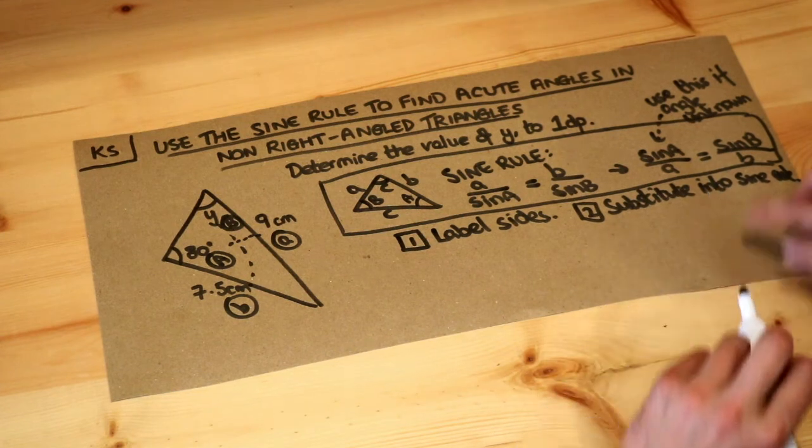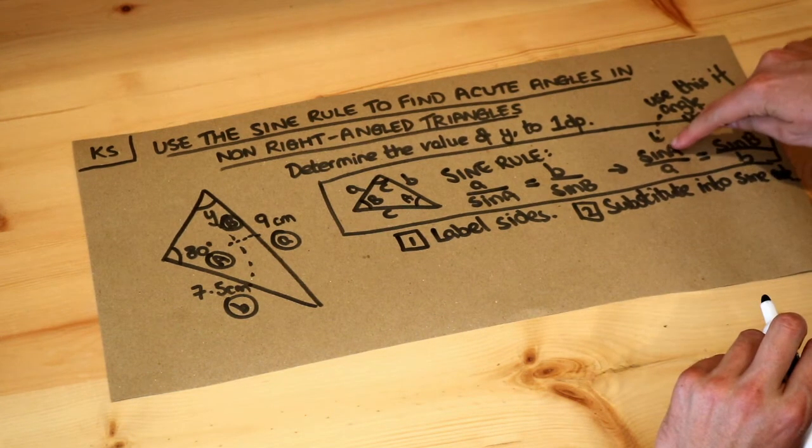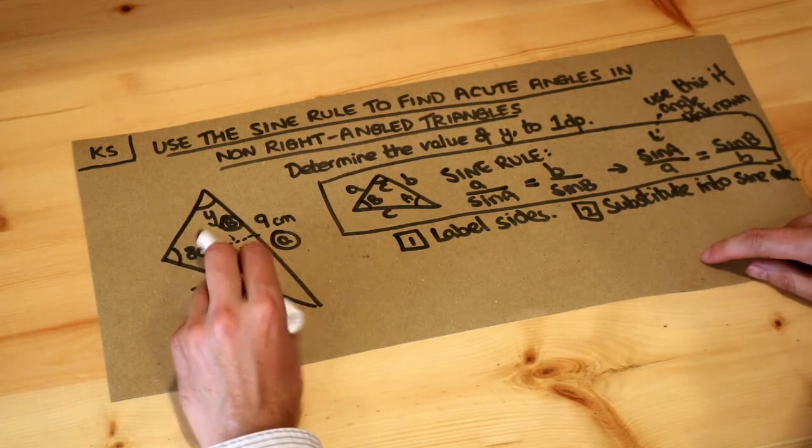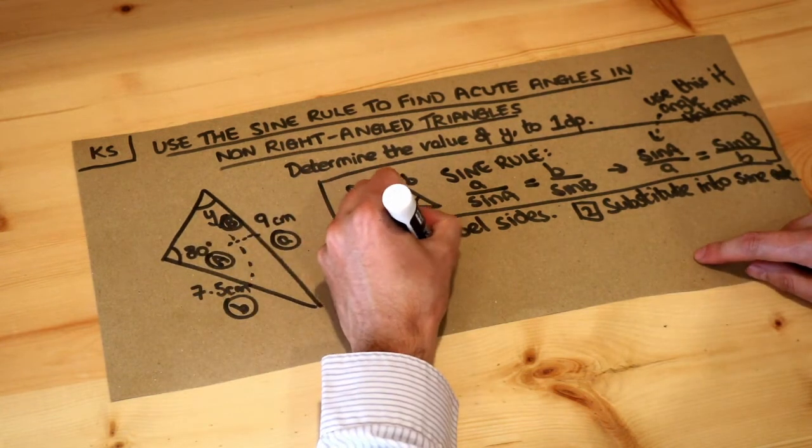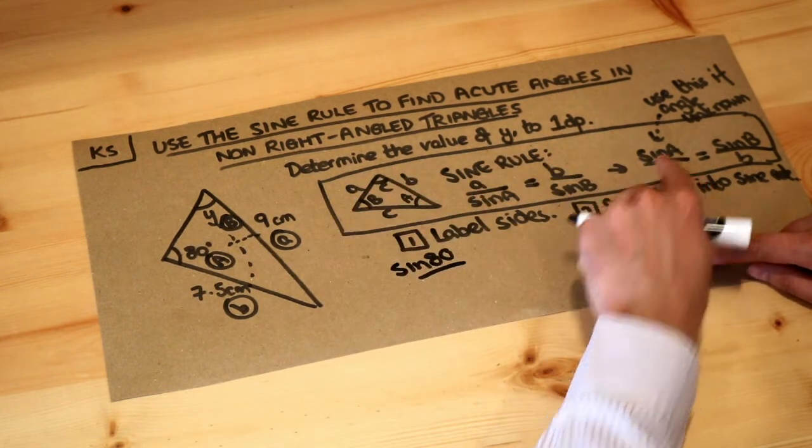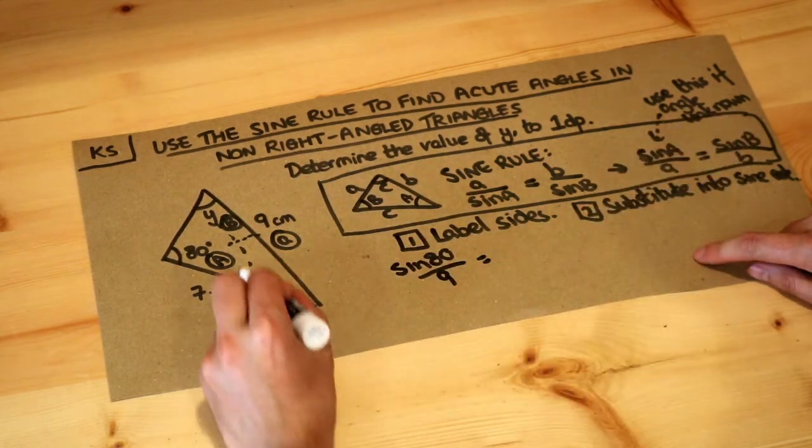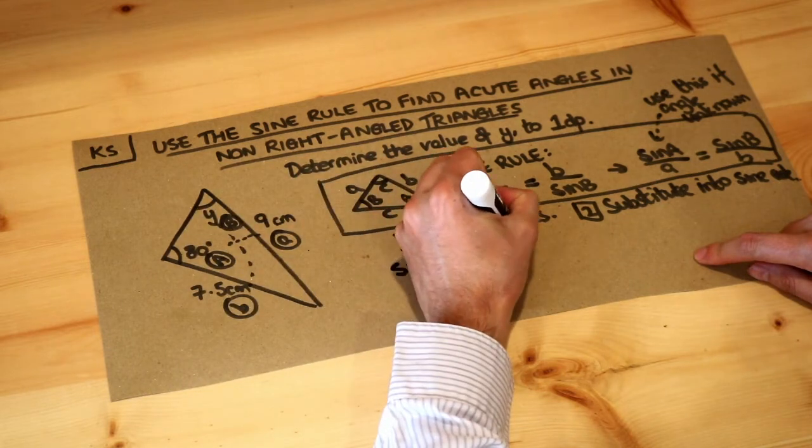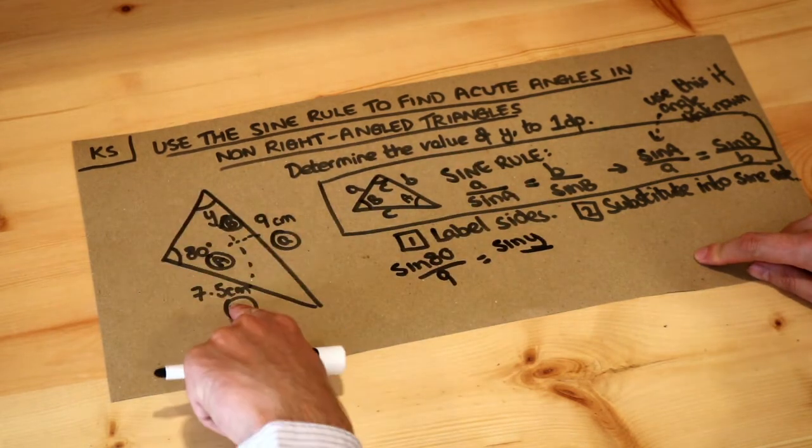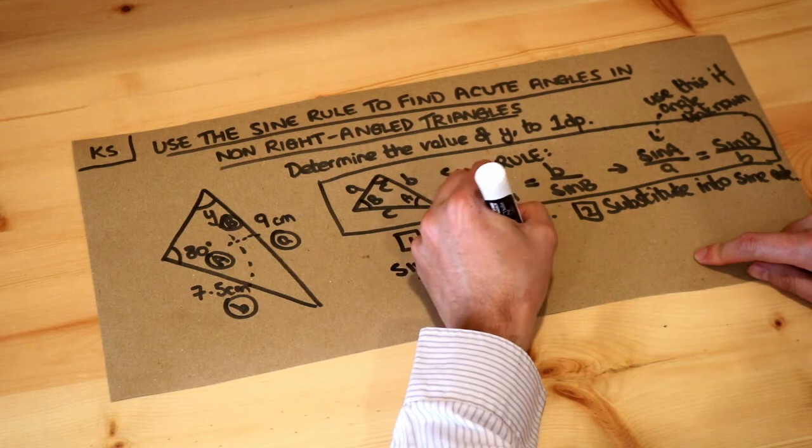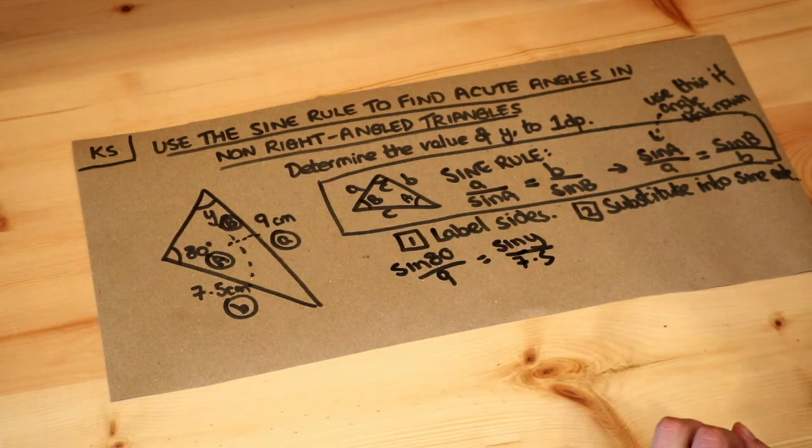So let's substitute into the formula. Now we're using this version, so sine of capital A, so sine of 80, divided by the length of the opposite side which is 9, is equal to sine of capital B, so sine of y, divided by the length of the opposite side which is 7.5.